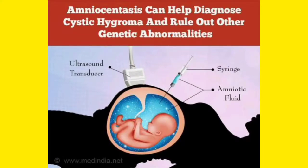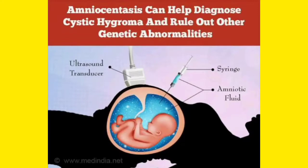When the child is inside the womb of the mother, we can diagnose cystic hygroma using a process known as amniocentesis. An ultrasound transducer is placed above the mother's belly, and with the help of a syringe, amniotic fluid is collected. By examining the amniotic fluid — amniocentesis — we can find out if the baby has a cystic lesion around the neck or head, and we can also rule out other genetic abnormalities in the fetus.